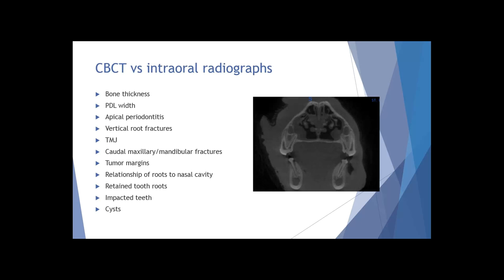You can read papers on apical periodontitis comparing intraoral radiographs versus Cone Beam CT — if anyone wants a list of references from this presentation, I'm happy to send that to you. Vertical root fractures are much easier to identify in three dimensions. TMJ cases as well — looking at TMJ on skull films or using size-four phosphor plates is not going to give you the imaging quality you get with 3D. Caudal maxillary and mandibular fractures are another area where CBCT is particularly helpful when you can't get your sensor all the way to the back of the mouth.